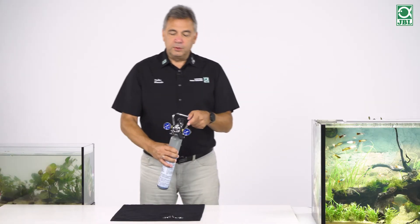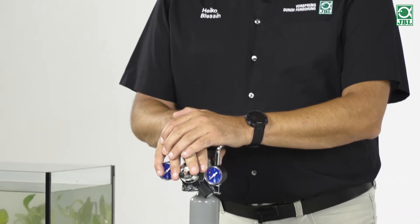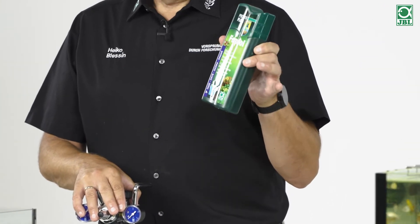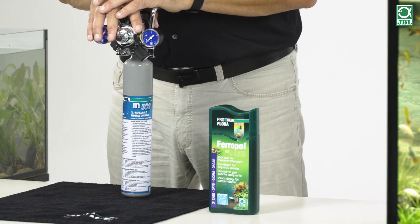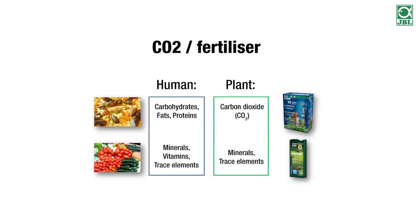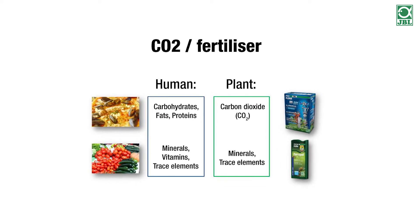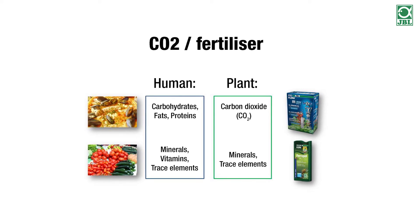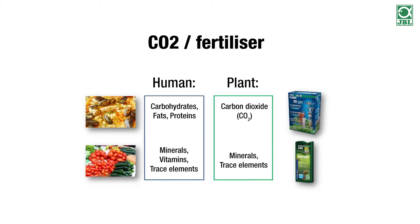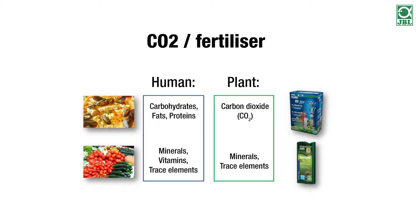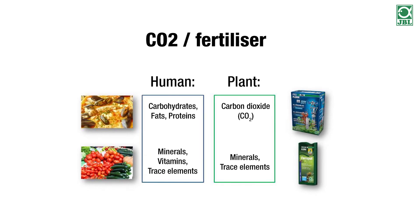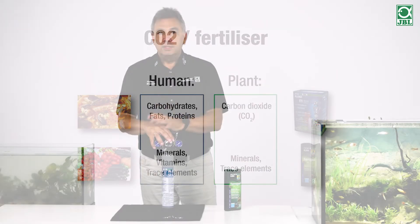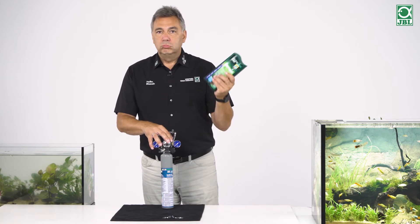If we connect a CO2 system and supply the plants with their main food — CO2, or carbon dioxide — why do we still need fertilizer? Well, they are very different things. Let's compare it with human food: humans need carbohydrates, fats, and proteins, which is equivalent to CO2 as the main food source for plants. But carbohydrates, fats, and proteins alone would not be enough for humans — we also need vitamins, minerals, and trace elements. Fertilizer plays the same role for plants. One is just as necessary as the other, and plants also need a balanced diet that simply includes CO2.